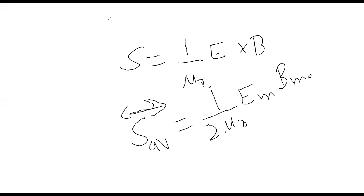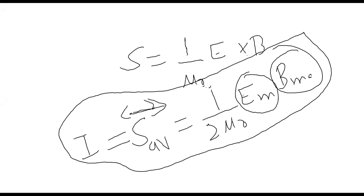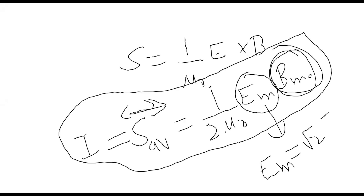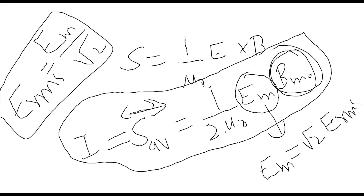The intensity can also be written using RMS values. The maximum amplitude E_max is related to the RMS value by E_max = √2 · E_rms, so E_rms = E_max / √2. RMS values are used because the simple average of a wave is zero due to equal positive and negative values. The RMS value is found by squaring all values, taking the mean, and taking the square root.